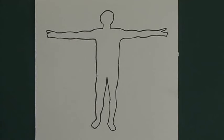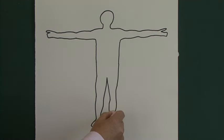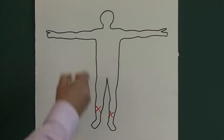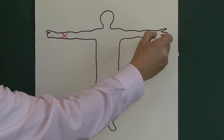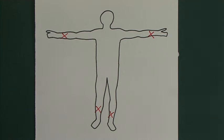In a 12-lead ECG, we are provided with 12 views of the heart. How does this come about? We have an electrode on the patient's left leg and on their right leg, on their right arm and on their left arm. And we have, as we'll see later, six chest electrodes.